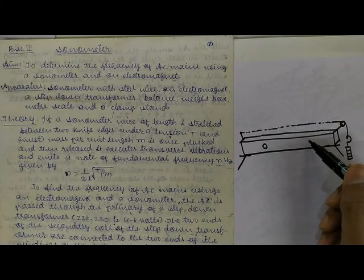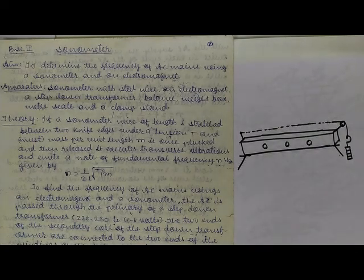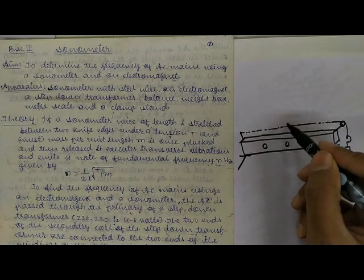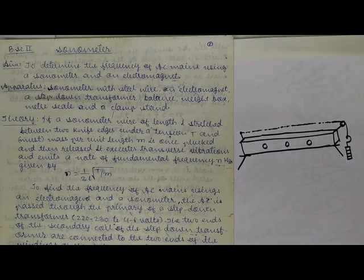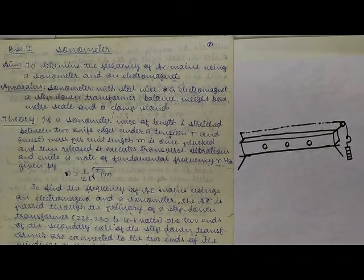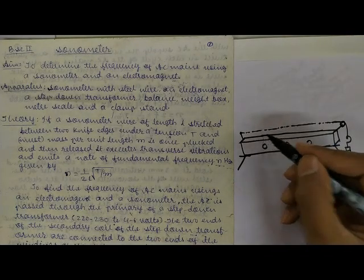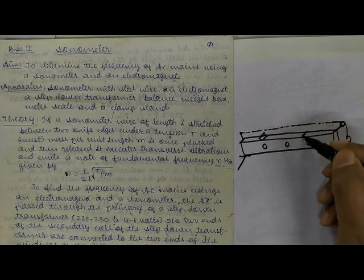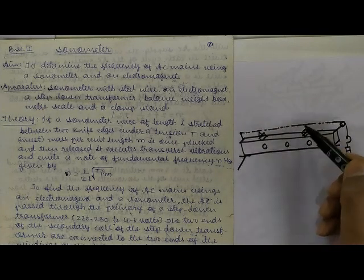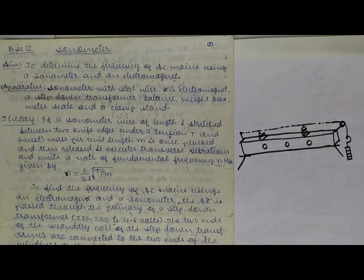The wooden box has holes to avoid air gaps. In your 12th standard experiment, you mounted a paper rider and used a tuning fork — when the frequency of the tuning fork matched the string's vibration frequency, resonance occurred and the rider fell. Here we also have two movable knife edges that touch the wire and can be moved along the box.